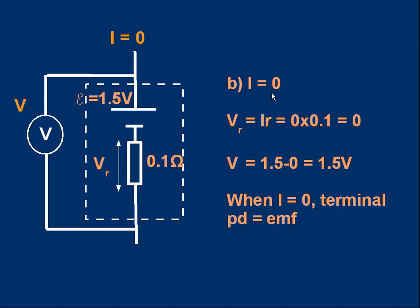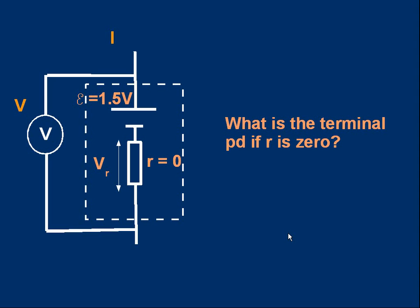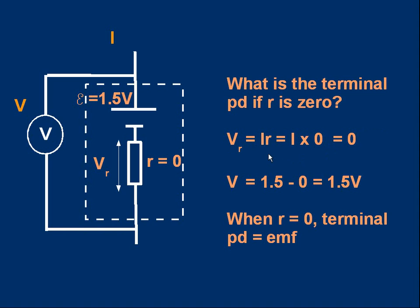How about when the current is 0? The lost volts will be 0 because I times r is 0 times r, which equals 0. So the terminal PD will be the EMF minus 0, which is the same as the EMF. The general rule is: when I is 0, when the current through the cell is 0, the terminal PD equals the EMF. What if the internal resistance is 0? The lost volts will be 0 because I times r is I times 0. The terminal PD will equal the EMF — 1.5 minus 0 is still 1.5. Another general rule: when the internal resistance is 0, the terminal PD equals the EMF. In real life, cells don't have 0 internal resistance, but they might have a very low internal resistance.